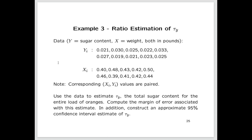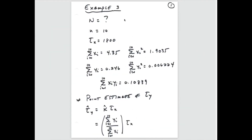We want to use the data to estimate τ_y, the total sugar content for all oranges in the entire load, using what we know about the x values and the total weight of the shipment. We also want to compute the margin of error and construct an approximate 95 percent confidence interval for τ_y. Note that we don't know the total population size N — the total number of oranges in the shipment — and we won't count them.